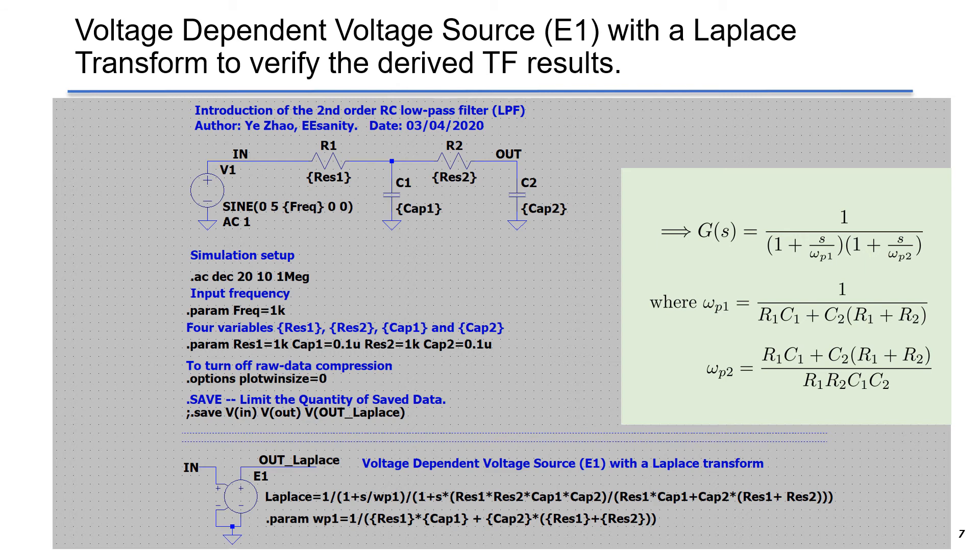In the highlighted equations, we see the canonical form of the transfer function for the second-order RC filter. In the AC analysis, we want to compare the Bode plots drawn by two different approaches.